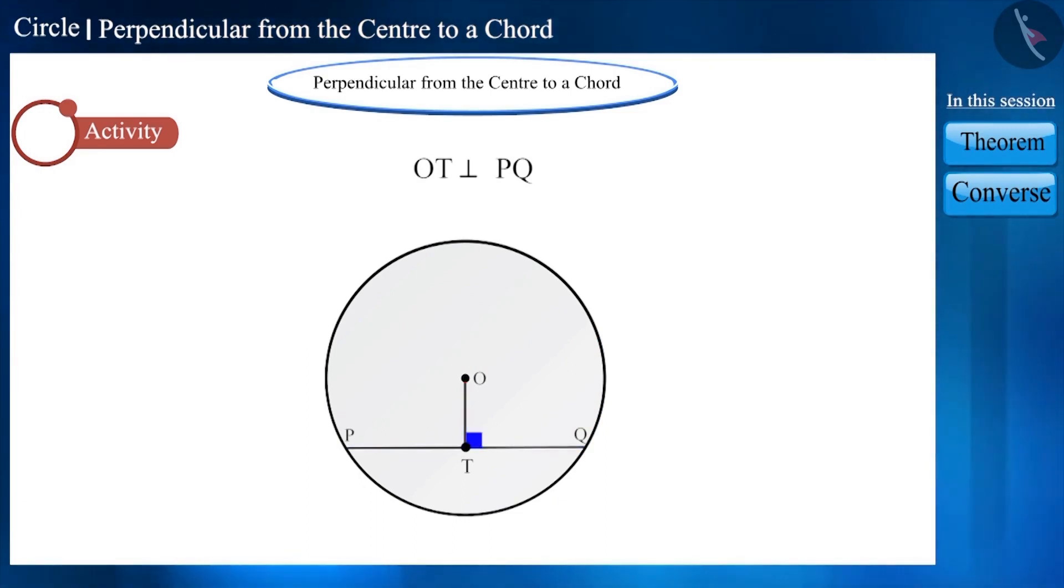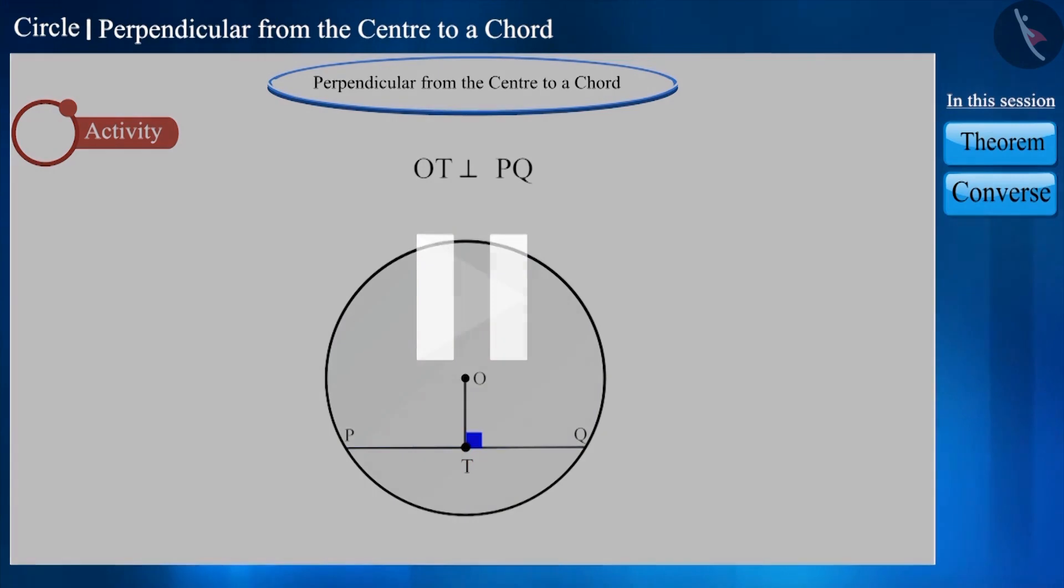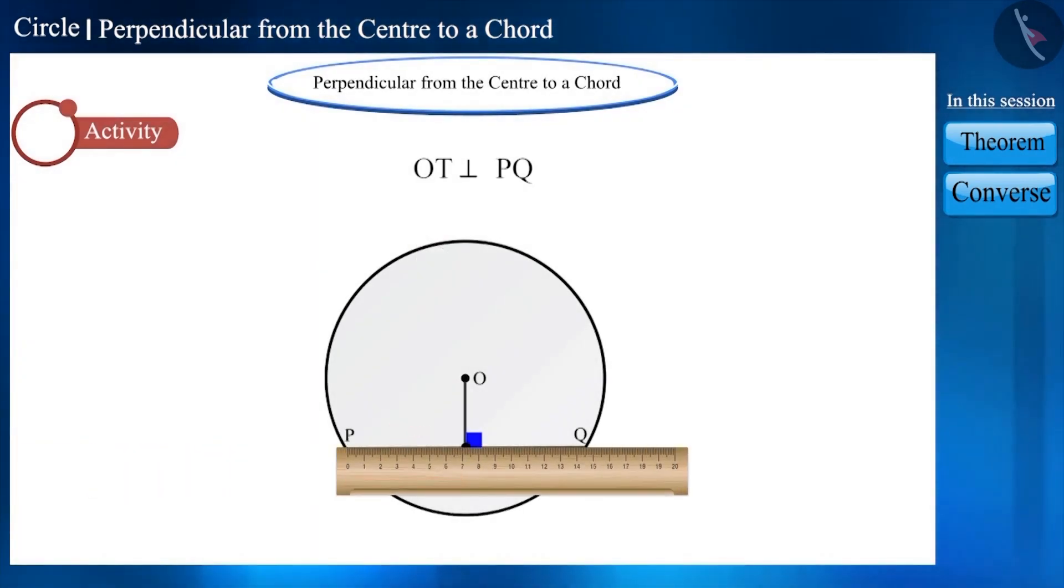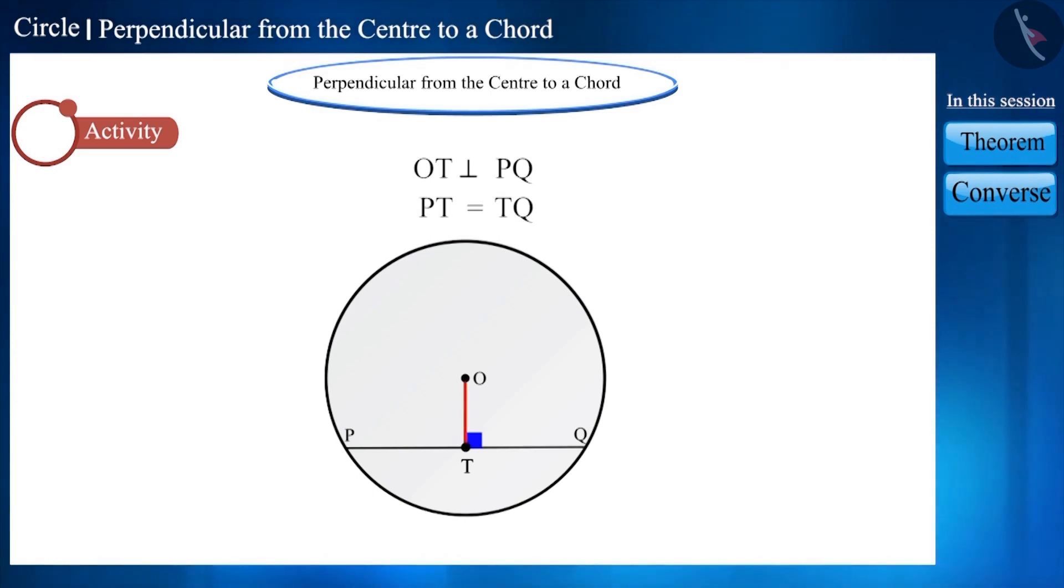Friends, here T is the midpoint of chord PQ. You can pause the video and check it. Friends, you can see that the length of these two segments are equal. That is, line segment OT perpendicularly bisects chord PQ.